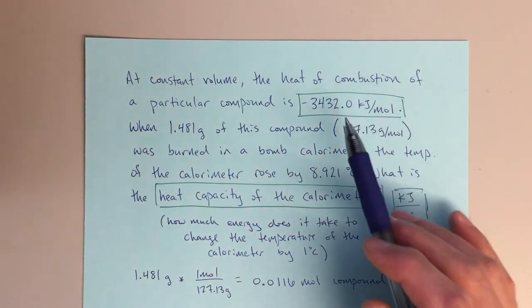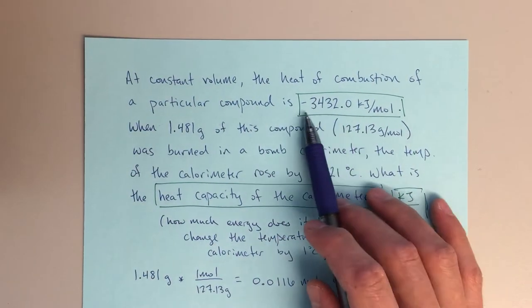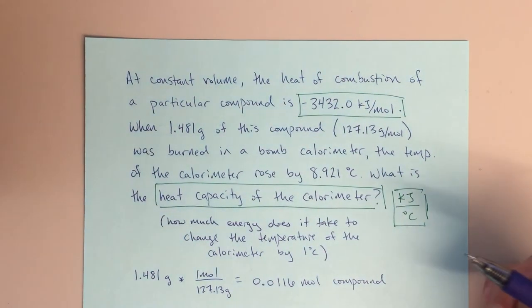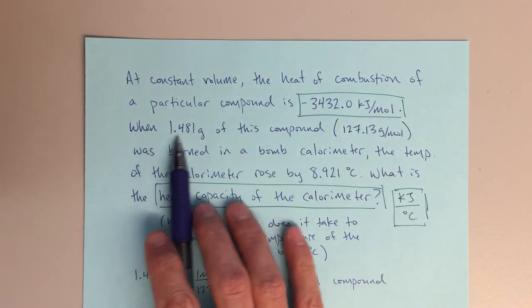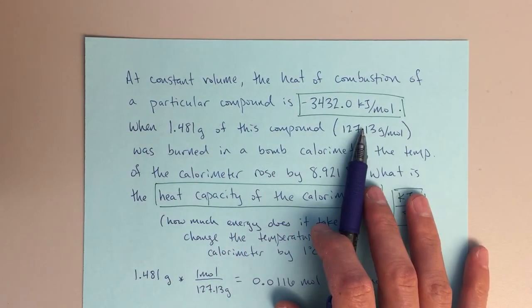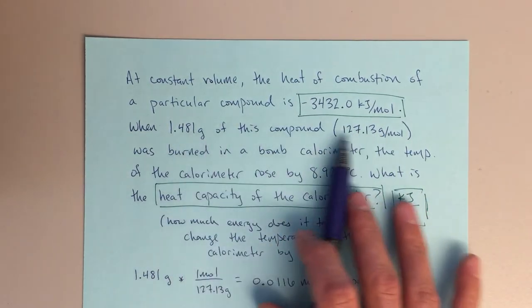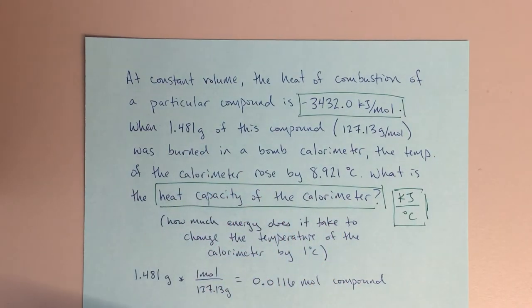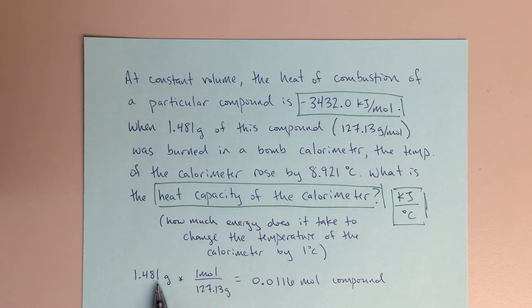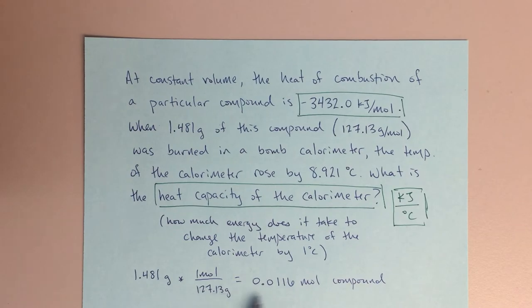Essentially what this is saying is if I burn one mole of this compound, I'm going to get this many kilojoules of energy out, evolved. Then it says when 1.481 grams of this compound, and it gives us our molecular mass of 127 grams per mole. This information can be used to figure out the moles of that compound, which is what I've done: 1.481 divided by 127 gives us 0.0116 moles of the compound that we're actually burning.